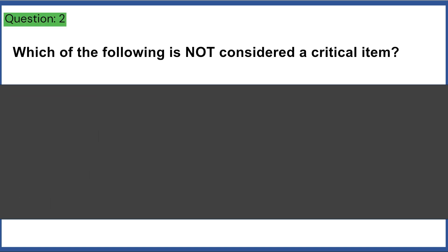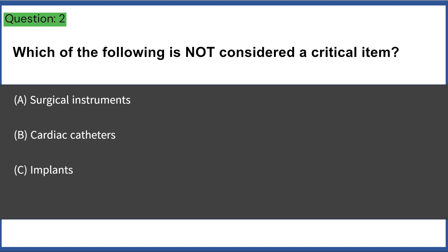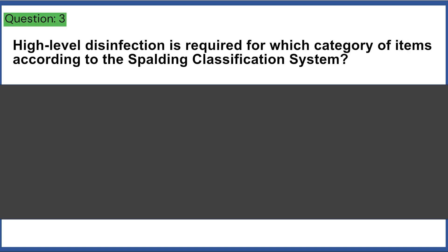Which of the following is not considered a critical item? a) surgical instruments, b) cardiac catheters, c) implants, d) endotracheal tubes. Answer: D, endotracheal tubes.